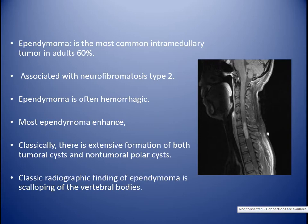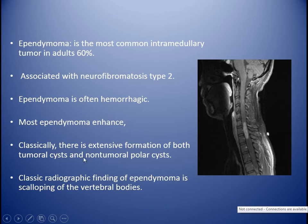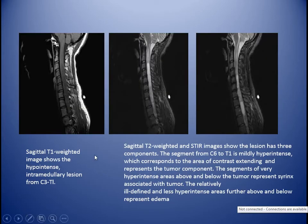Ependymoma is the most common intramedullary tumor in adults, about 60%, associated with neurofibromatosis type 2 especially in children. It is hemorrhagic, giving a complex MRI appearance with peripheral hemosiderin deposition, dark rim on T2, and blooming artifacts. Most ependymomas also enhance. Classically there is extensive formation of both tumoral and non-tumoral polar cysts. The classic radiographic finding is scalloping of the vertebral body, though rare, seen in advanced stages.